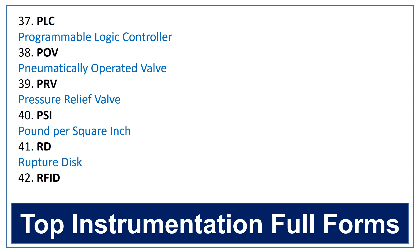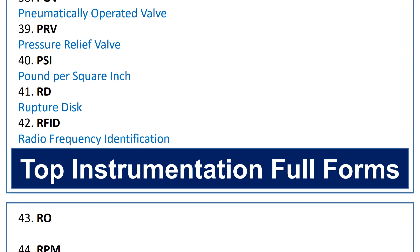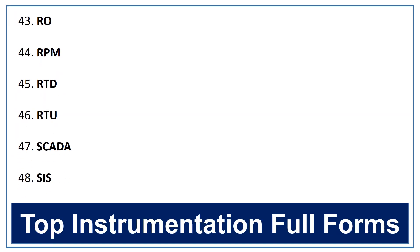RFID. The full form of RFID is radio frequency identification. RO. The full form of RO is reverse osmosis. RPM. The full form of RPM is revolution per minute.